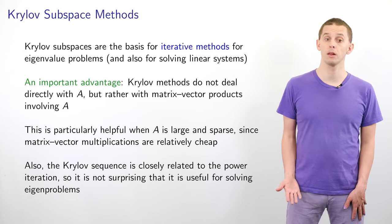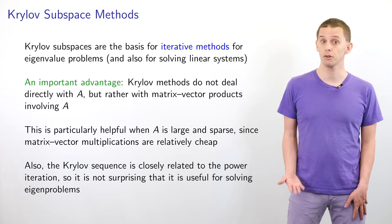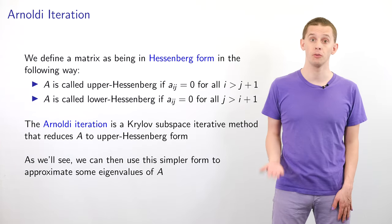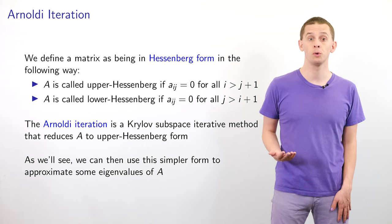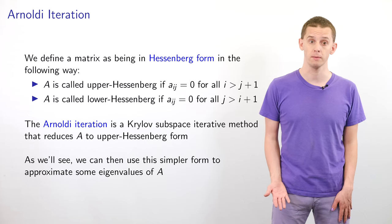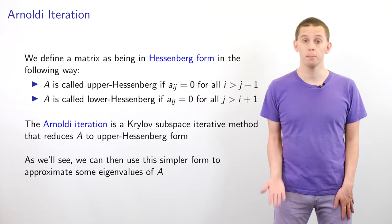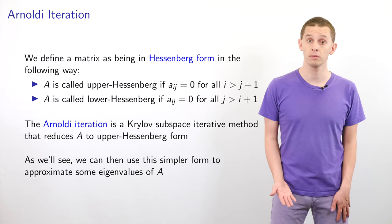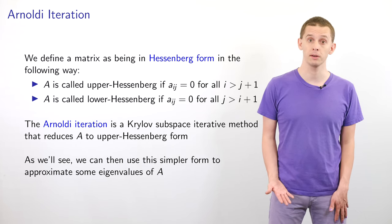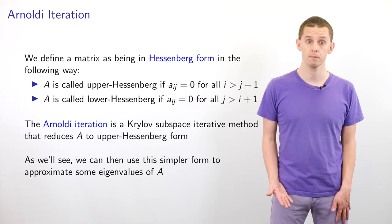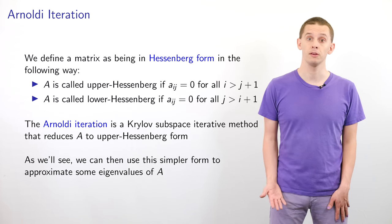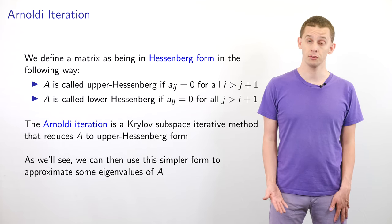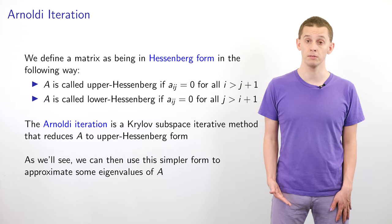We can also see that a Krylov sequence is closely related to a power iteration, and therefore it's not surprising that it's going to be useful for solving eigenproblems. The first Krylov method we'll look at is the Arnoldi iteration. To begin, we'll define a matrix as being in Hessenberg form. We'll say that A is called upper Hessenberg if its entries A_{ij} are equal to zero for all i greater than j+1 — equivalent to an upper triangular matrix but allowing for terms one below the diagonal. We'll say that A is called lower Hessenberg if its entries A_{ij} equal zero for all j greater than i+1 — equivalent to a lower triangular matrix but allowing for entries one above the diagonal.